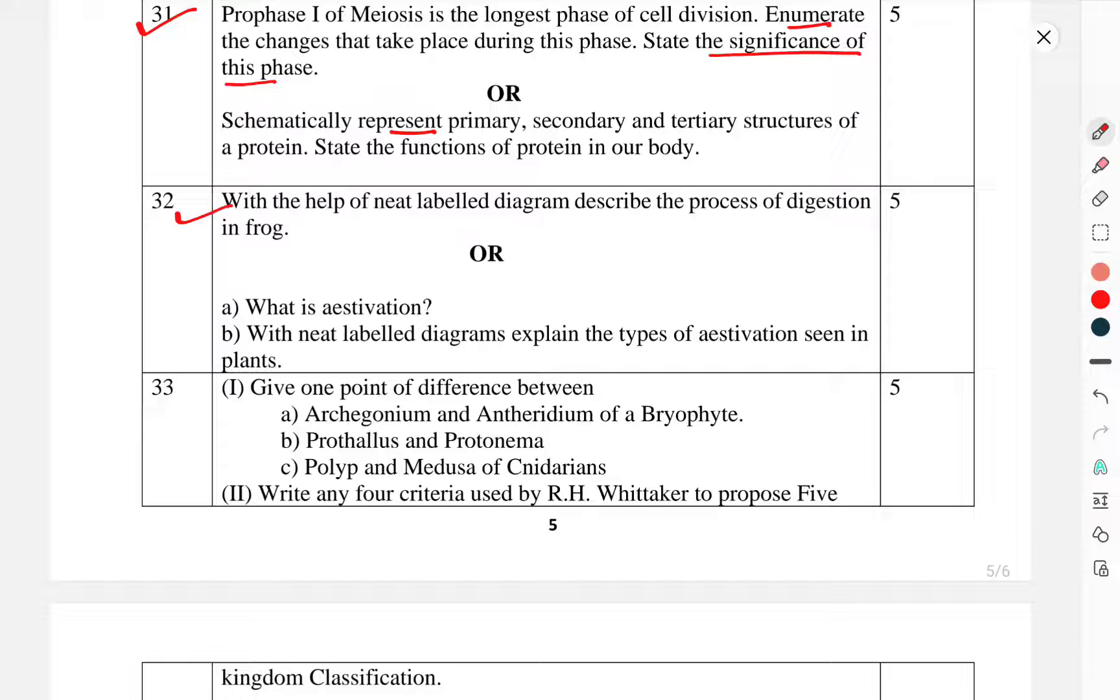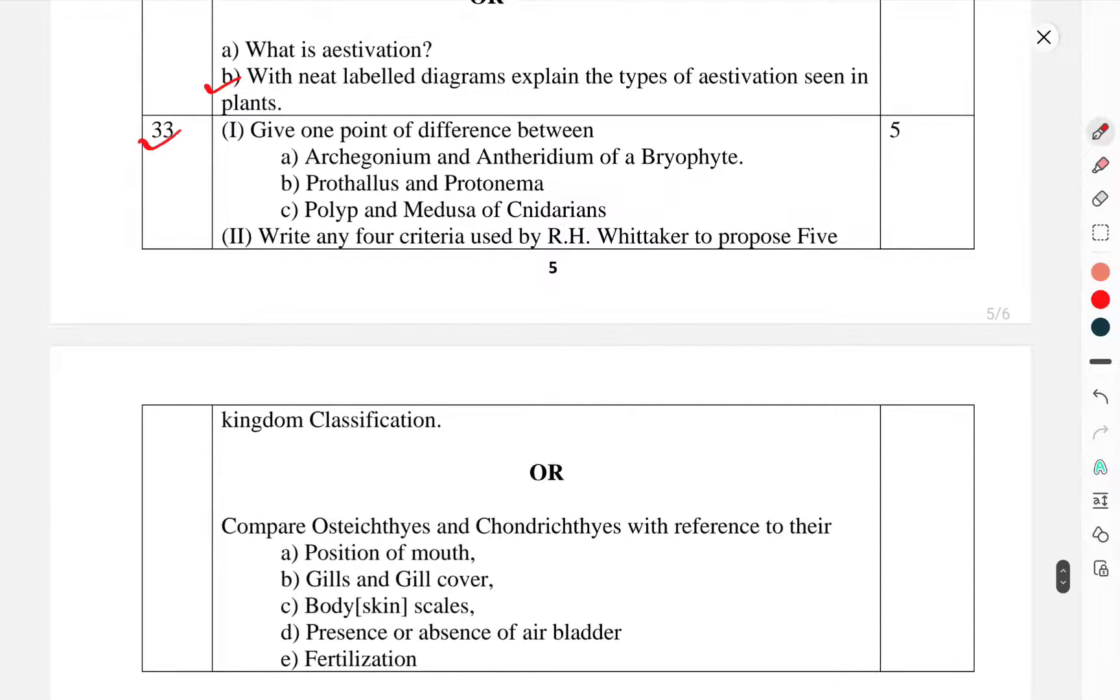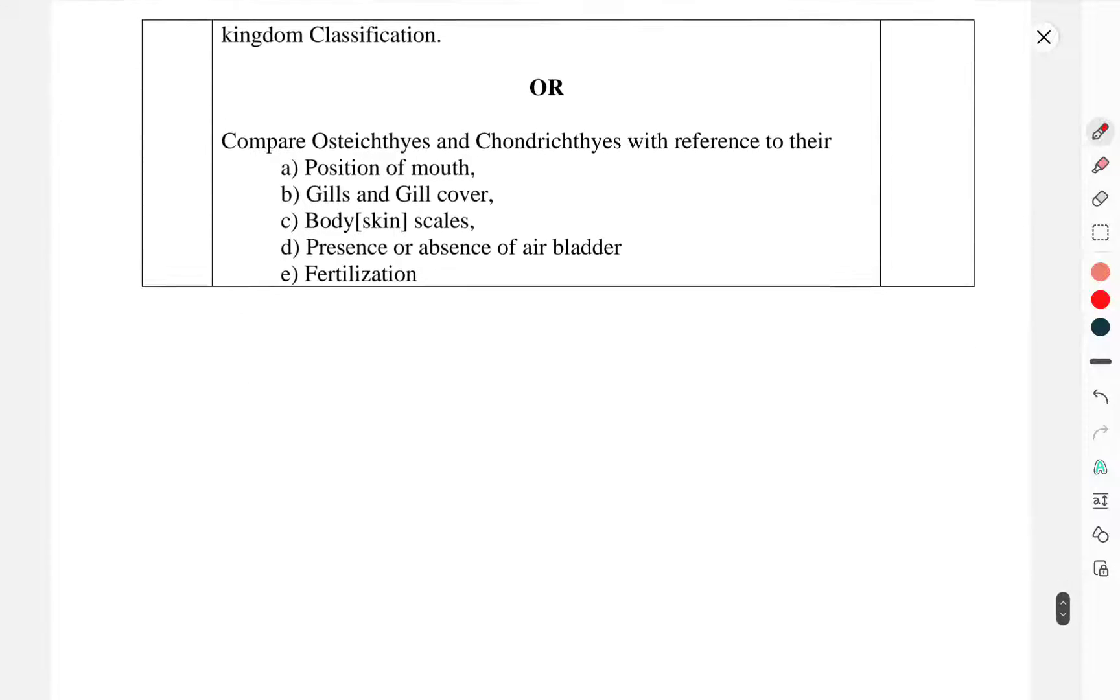Or, with a neat labeled diagram, explain the type of aestivation seen in plants. Question 33: Give one point difference between archegonium and antheridium in bryophytes, prothallus and protonema, polyp and medusa in cnidarians. Write four criteria used by R.H. Whittaker to propose 5 kingdom classification.